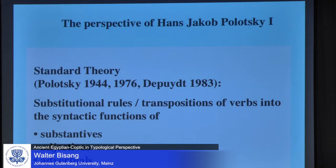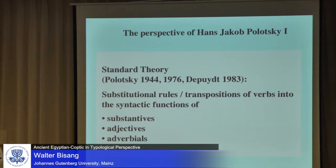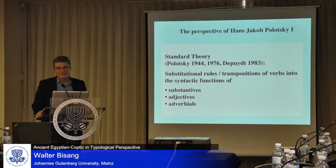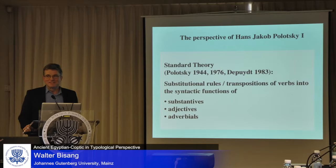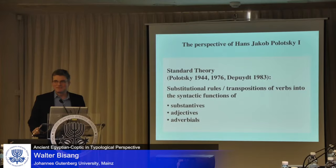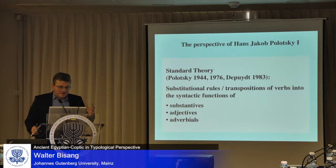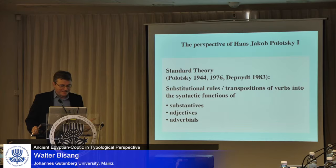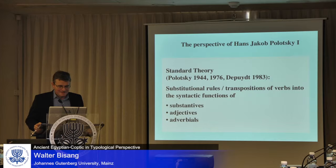I would like to start with Polotsky again. Of course, I'm not an Egyptologist, but I would also like to show how Egyptian is just another language. And since Egyptian, as far as we perceive it nowadays, is a written language, I will also show examples from another written language, namely classical Chinese, but that will not be the only language. I will look at a number of different languages for showing how Polotsky's idea, the so-called standard theory — even though I think he didn't like that term — the idea that there are substitutional rules, transpositions of verbs into the syntactic functions of substantives, adjectives, and adverbials.